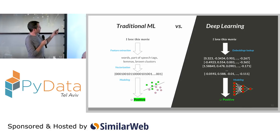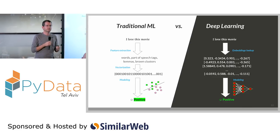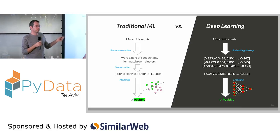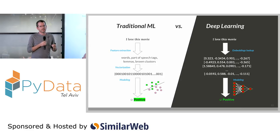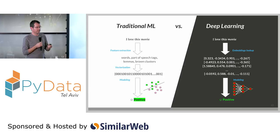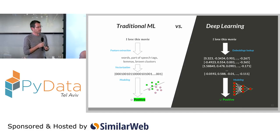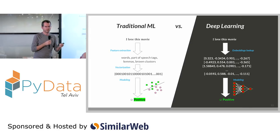With a traditional machine learning algorithm, the first step is feature extraction or feature engineering, where we try to extract features from the input. In NLP we typically start by breaking the text into words. Breaking English text into words is pretty simple, but Chinese, for example, has no spaces between words — Japanese, Korean, all these languages are more challenging and require language-specific tools.